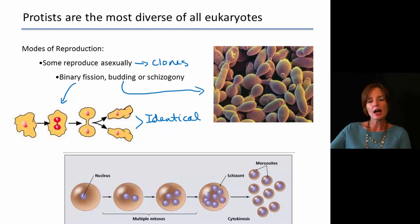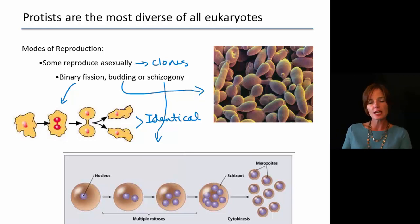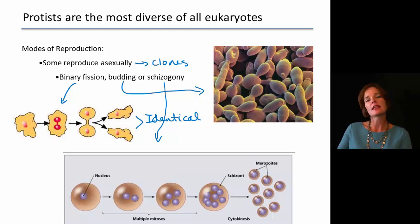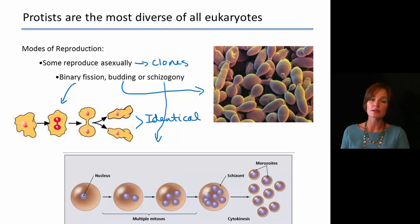We also have what is called schizogony. In this case you have duplication or copying of the nucleus many times — many mitosis events — so that you have one cell with a bunch of nuclei inside of it. Then cytokinesis produces a whole bunch of daughter cells all at once. Since mitosis was involved, these daughter cells are genetically identical to each other.